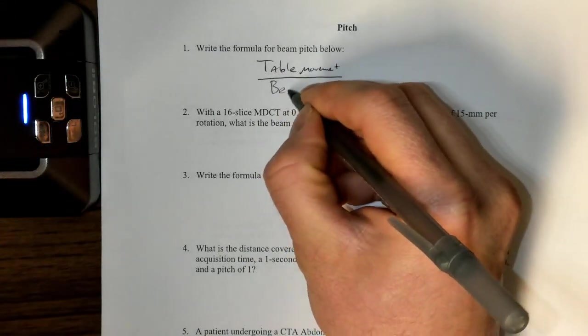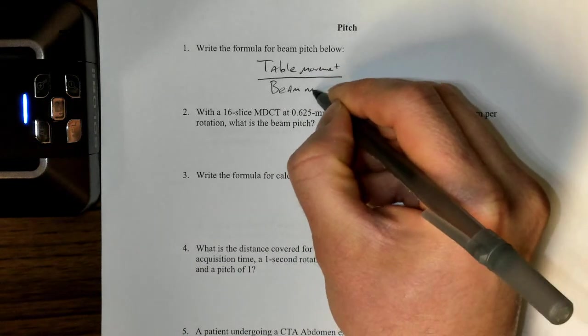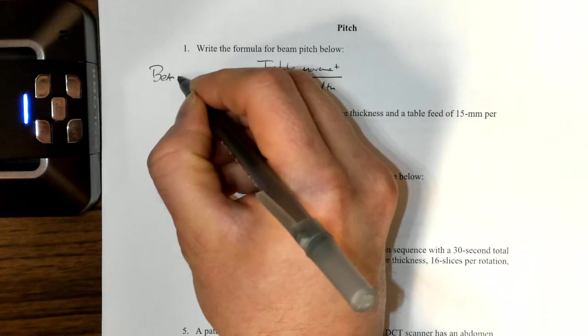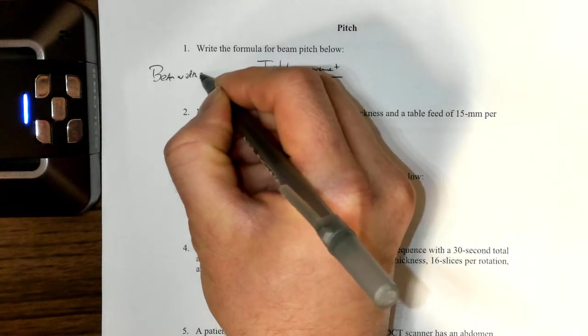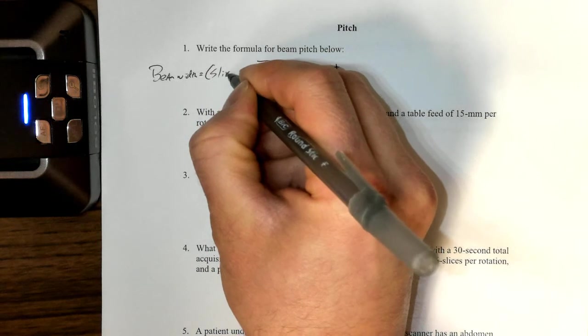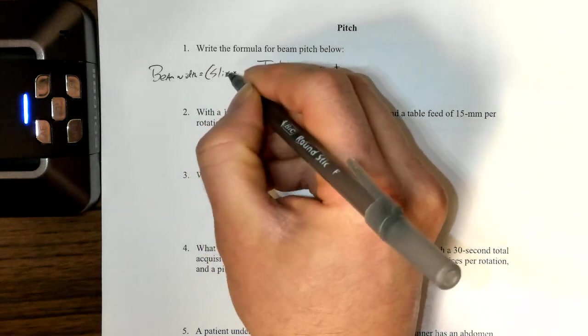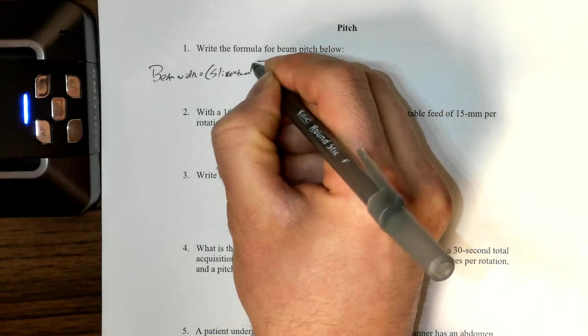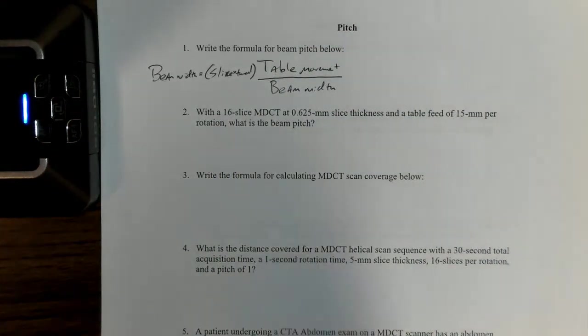The way that we figure out the beam width is beam width equals slice thickness times slice number. So the slice number times the thickness of the slice, so this is the formula that we're interested in.